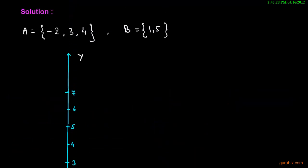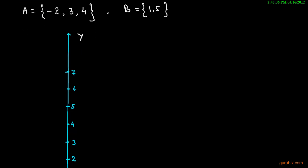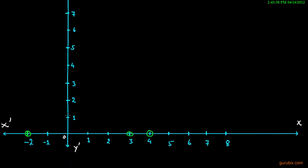Now we shall represent elements of set B on this vertical line. These are 1 and 5. This is 1 and this is 5.